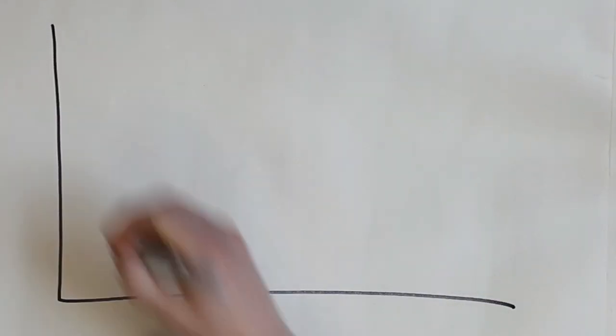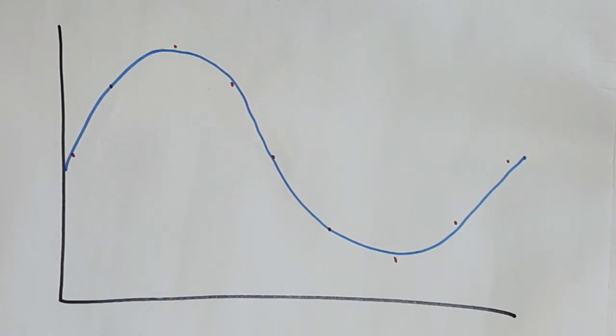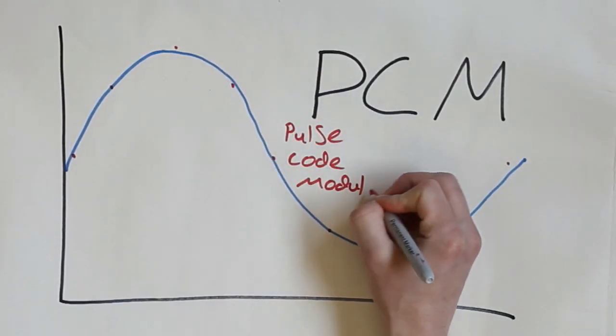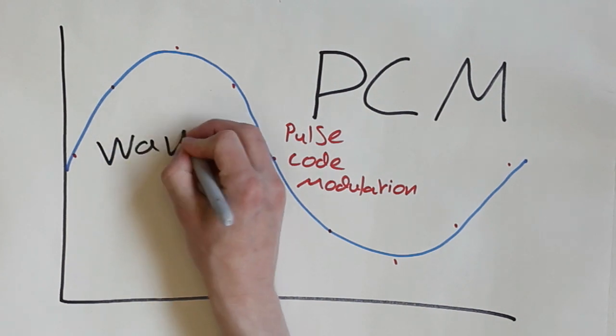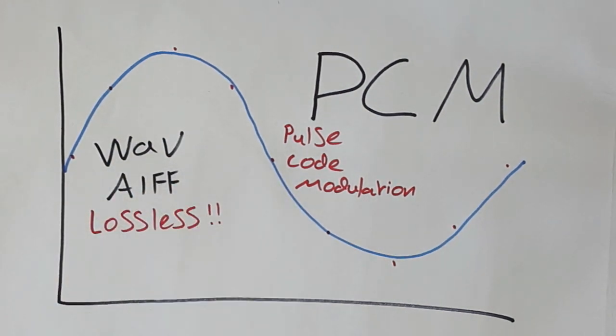So firstly, the method of capturing a waveform I described in the previous video actually has a name, which is PCM, or Pulse Code Modulation. It's the basis for all audio formats, and when stored raw, as a WAV or AFF file for instance, is what's known as lossless audio. I'm going to talk more about audio formats another time however.